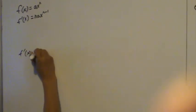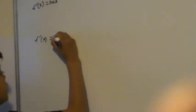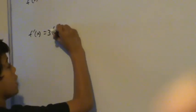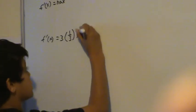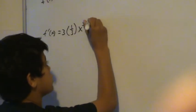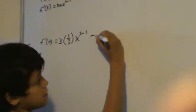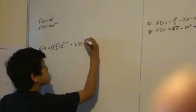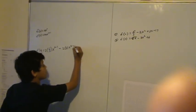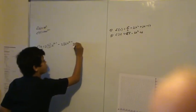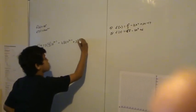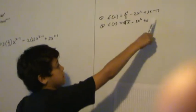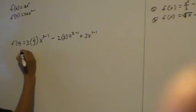f dash of x, which means it's the first derivative. 3, because I bring the power to the front. 1 over 3. And x power 3 minus 1. Minus 2 — bring power 2 to the front. x power 2 minus 1. Plus 3x power 1 minus 1. And when you differentiate negative 17, it becomes 0, so we don't bother writing it.